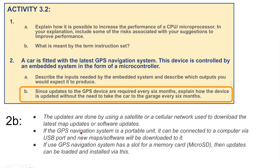If the GPS navigation system is a portable unit, it can be connected to a computer via a USB port and new map software will be downloaded to it. If the GPS navigation system has a slot for a memory card such as a microSD, then updates can be loaded and installed via this device. So either connect to Wi-Fi or a cellular network and download the maps directly to the device in the car, or take the device out and connect it to a computer using a USB port, or update via a microSD card slot.